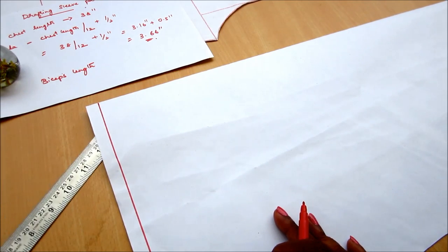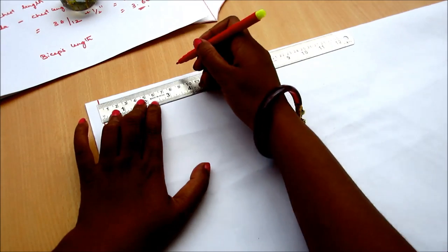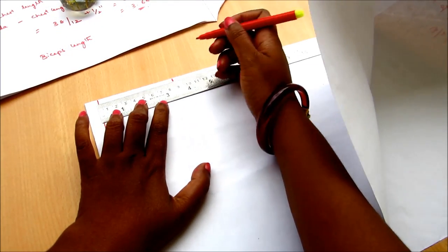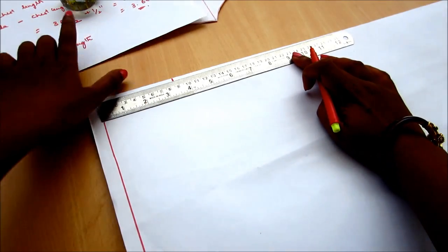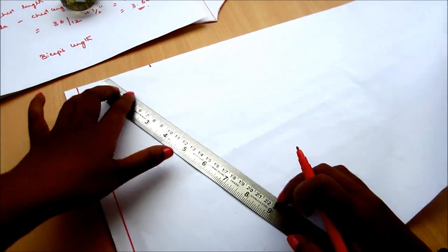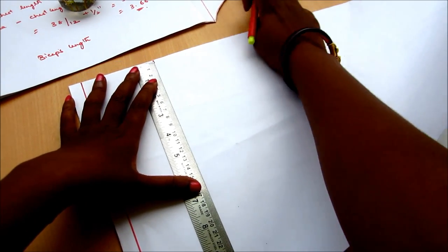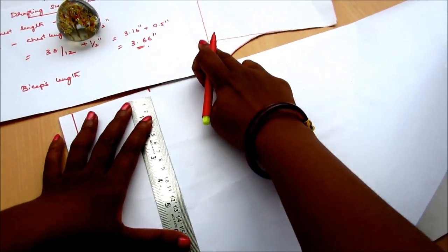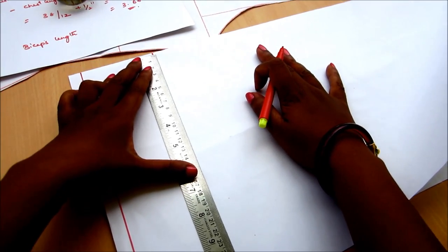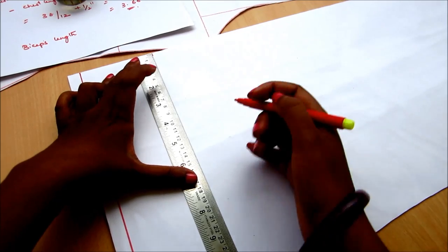And on this line mark half of your armhole length measurements. My full arm round length is 13 inches, so half of that is six and a half inches. Mark the six and a half inches.